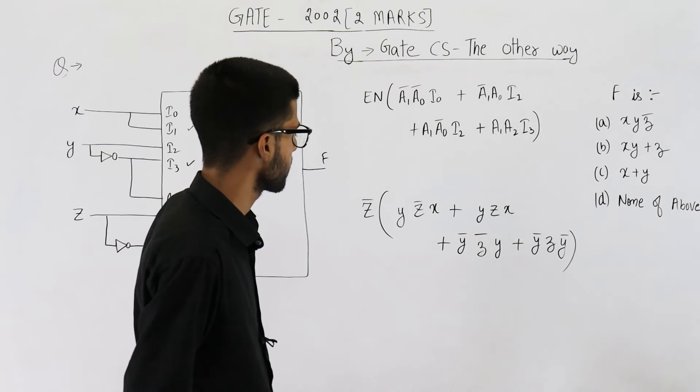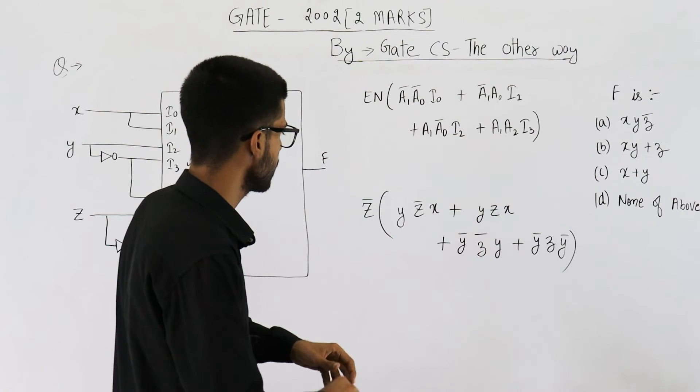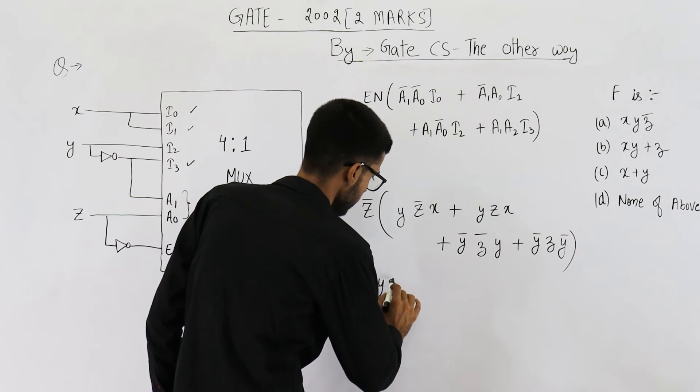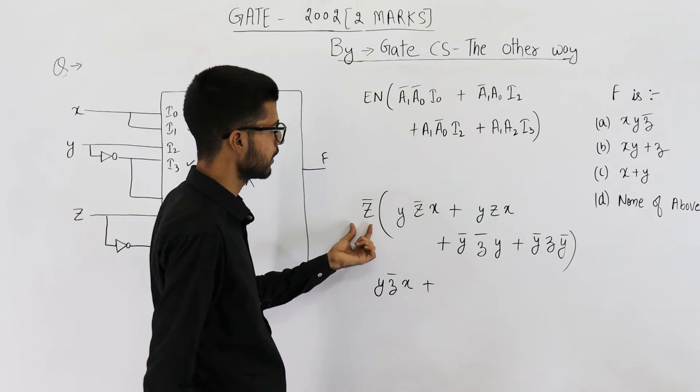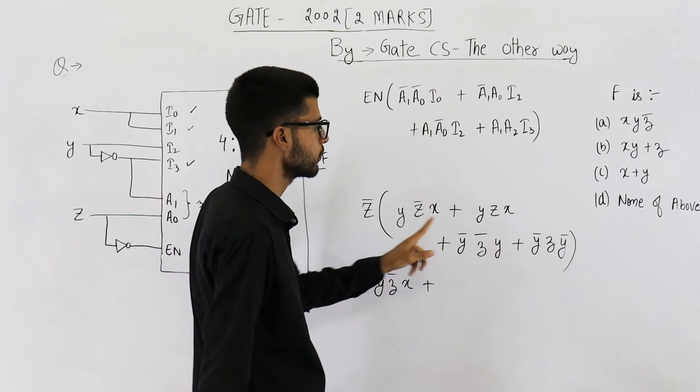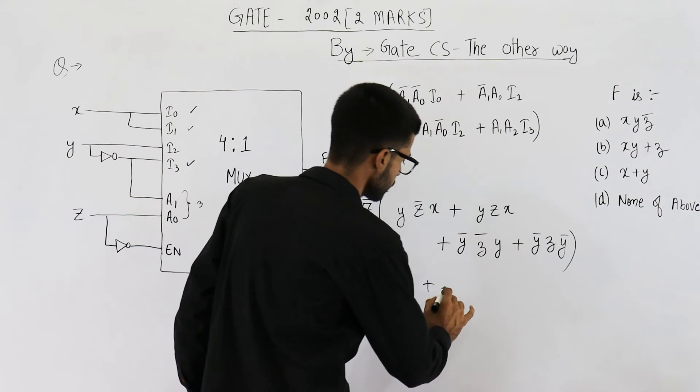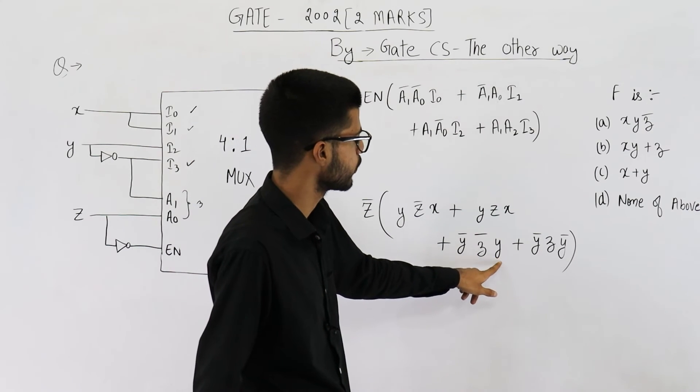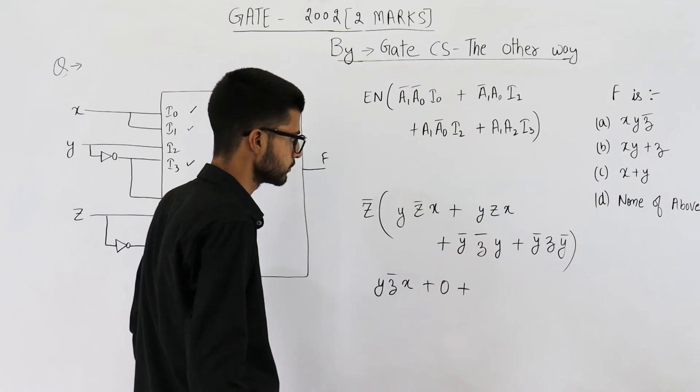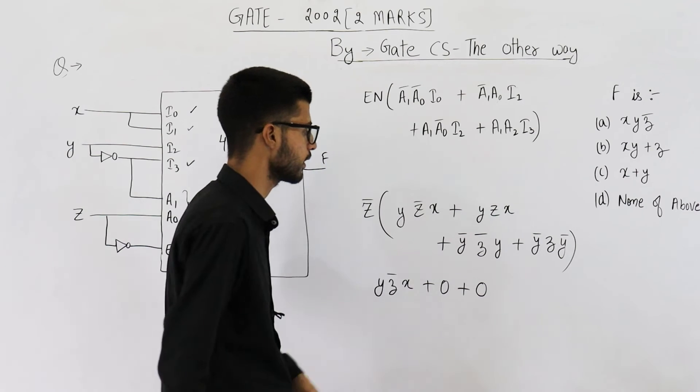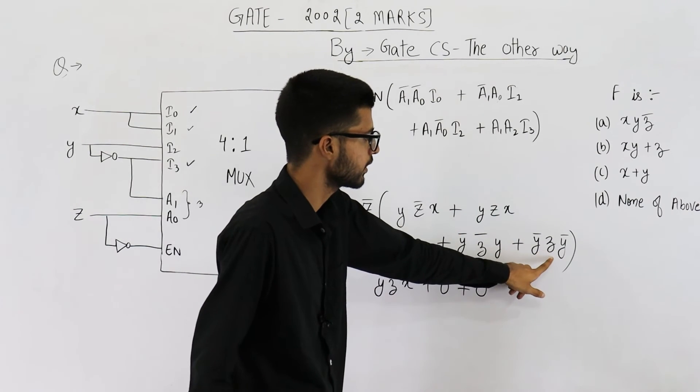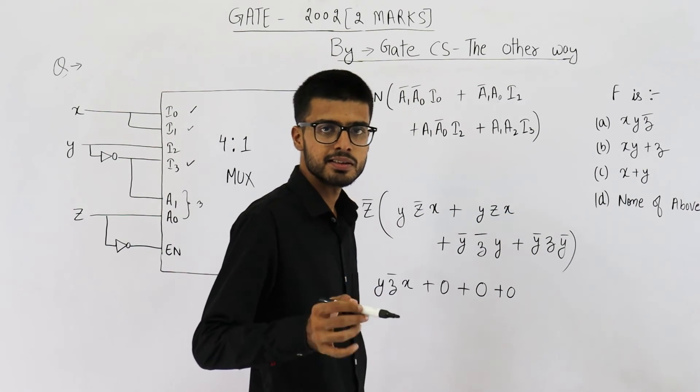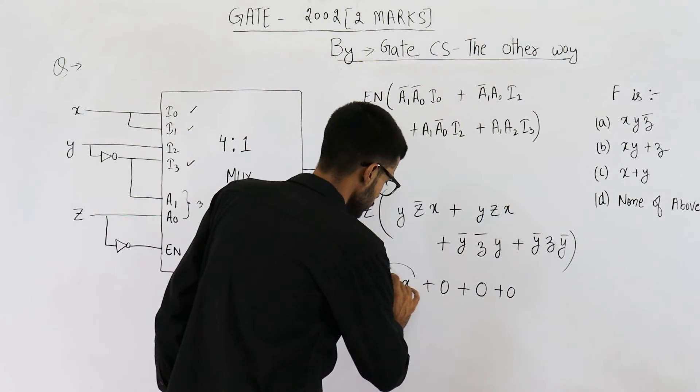Now, you can see if you multiply Z complement with this term, it will be Y Z complement X plus. Now, multiply Z complement with this term. Z complement dot Z will become 0. So, this term is 0 plus. This term is already 0 because it has Y into Y complement. So, this is already 0. Now, this one multiplied with this will also become 0. See, it has Z complement and this one has Z. Z complement dot Z is obviously 0. So, this is your answer.